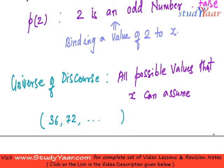So X can only take one of these values. It can only be binded to either 36 or 72 or any number which is of type 36K. That is the concept of your universe of discourse of a variable.